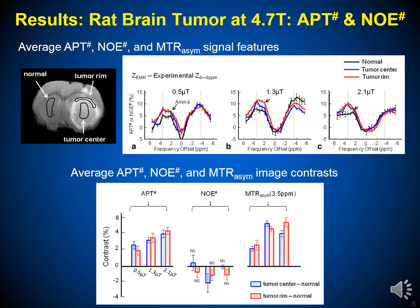APT contrast was positive at all three RF saturation powers, whereas NOE contrast was negative. Interestingly, the absolute APT image contrasts between tumor and normal tissue were consistently larger than the corresponding absolute NOE contrasts. In addition, MTR asymmetry at 3.5 ppm image contrasts were all dominated by APT# image contrasts.